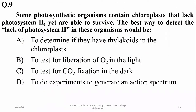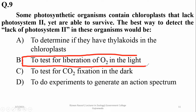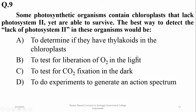Some photosynthetic organisms contain chloroplasts that lack photosystem 2, yet they are able to survive. The best way to detect lack of photosystem 2 in these organisms would be to test for the liberation of oxygen, because if they are producing oxygen they have photosystem 2, but if they are not releasing oxygen they are without photosystem 2. The hydrolase enzyme that produces oxygen by photolysis is associated with photosystem 2 only. So the right option is B.